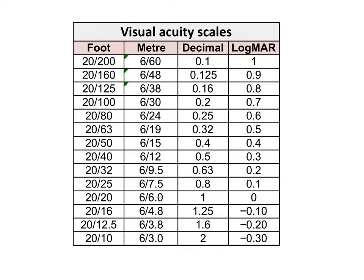This is the comparison between visual acuity scales. On the left-hand side are the Snellen scales in feet and in meters, then the decimal of the Snellen scale, and the LogMAR scale on the far right. 20/20 on the Snellen scale corresponds to zero on the LogMAR scale, and 20/200 is one. So most visual acuities fall between zero and one on the LogMAR scale.